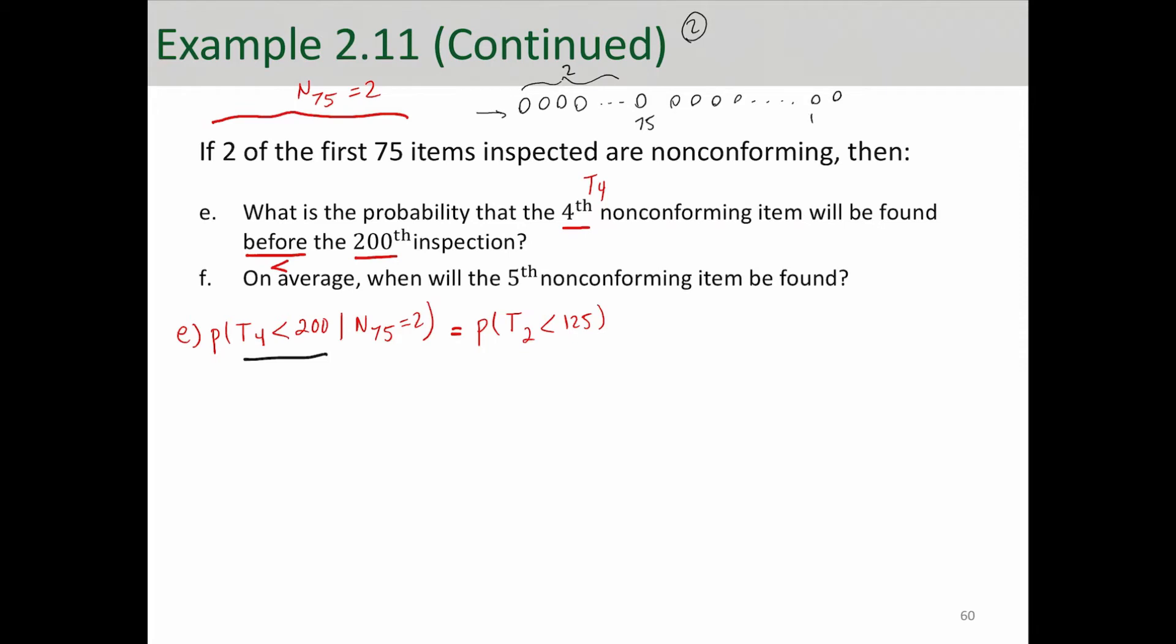This is 124, this is 125 after the 75. This is 1 and 2. So you want to see the second success before the 125th inspection. So that's why this condition changes the probability to probability of T2 less than 125.